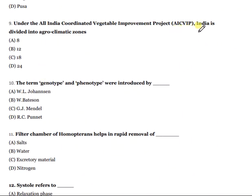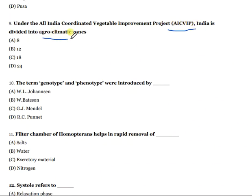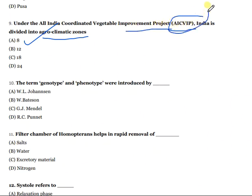Question 9: Under the All India Coordinated Vegetable Improvement Project (AICVIP), India is divided into how many agro-climatic zones? The right answer is eight. Note: under AICVIP there are 8 zones, while otherwise India has 15 agro-climatic zones.